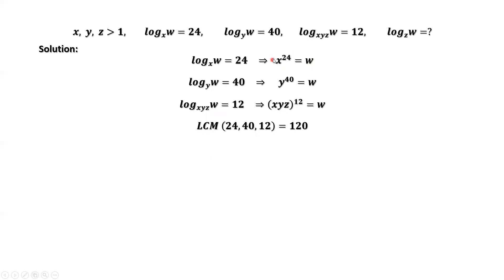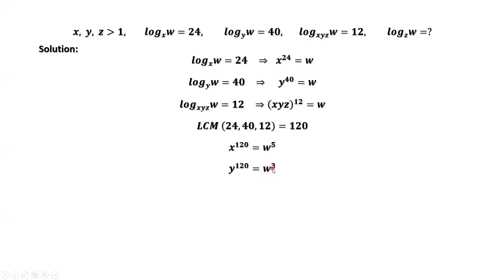From the first result, x to the power 24 equals w. We take the power 5 on both sides, giving x to the power 120 equals w to the power 5. Similarly, for y to the power 40 equals w, we take power 3 on both sides, giving y to the power 120 equals w to the power 3.